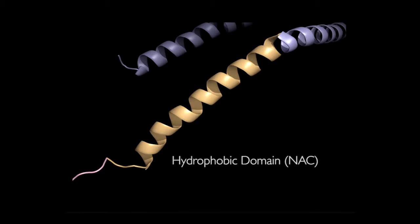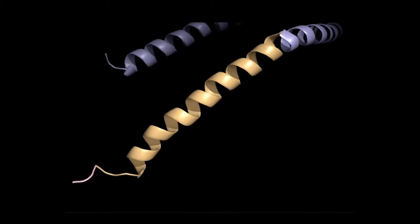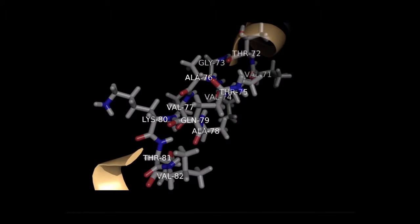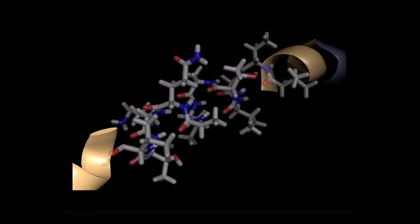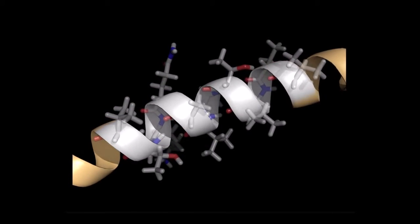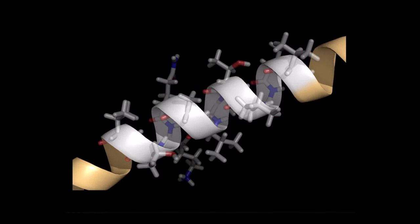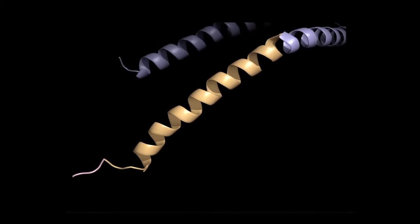The hydrophobic domain, also known as the NAC, is located from residues 66 to 95. A study at the University of Pennsylvania School of Medicine found residues 71 to 82 to be essential for the ability of alpha-synuclein to oligomerize. The NAC is believed to mediate the conformational change of alpha-synuclein from random coil to a beta-sheet structure upon aggregation.